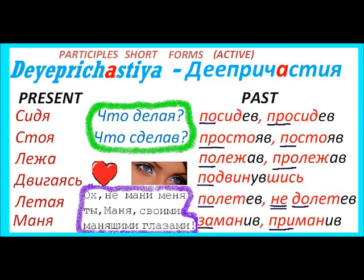Let's repeat one more time the present forms: сидя, стоя, лежа, двигаясь, летая, маня. These деепричастия are very short. And past forms always finish with В: посидев, просидев, простояв, постояв, полежав, пролежав, подвинувшись, полетев, не долетев, заманив, приманив. Present деепричастия answer the question что делая — doing what — and past forms answer что сделав — having done what — always. Thank you very much for your attention, bye.